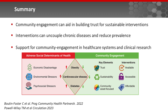In summary, community engagement can aid in building trust for sustainable interventions, particularly when they account for social determinants of health that promote chronic diseases like cardiovascular disease, obesity, and diabetes. These interventions can begin to uncouple these chronic diseases and reduce their prevalence. Community engagement can work within both the clinical research realm and the healthcare system to reduce health disparities and promote health equity.